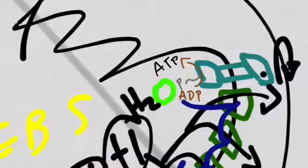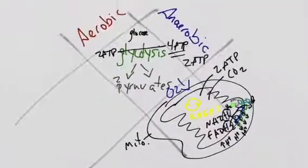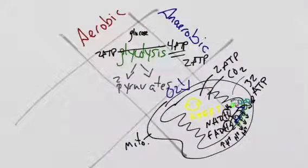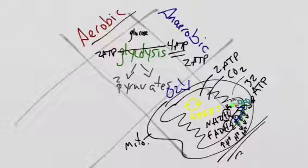This oxidative phosphorylation process nets 32 ATP through electron transport chain. So in this example of one glucose molecule going through the aerobic respiration path, 36 ATP are made.